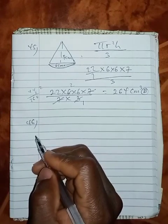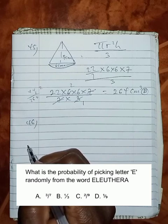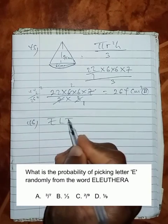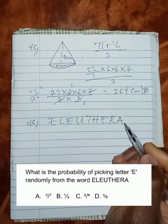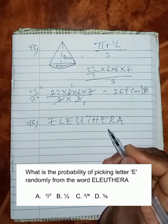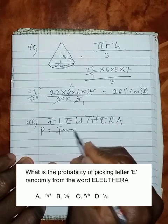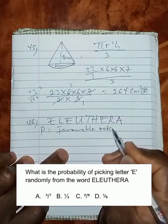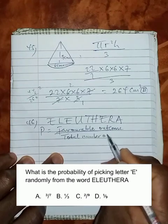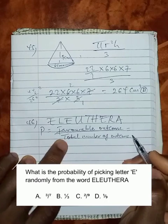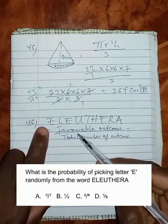Question 46 says, what is the probability of picking letter E randomly from the word E-L-E-U-T-H-E-R-A? What's the probability of picking the letter E? Probability is simply favorable outcome over total number of outcome. Favorable outcome is what is stated in the question.